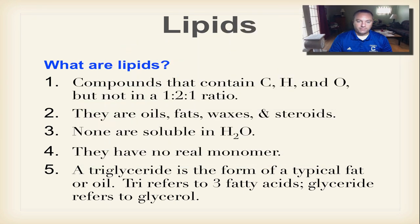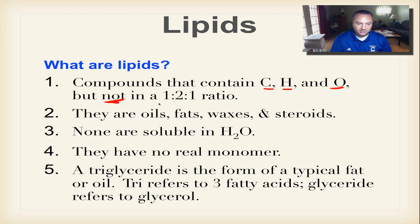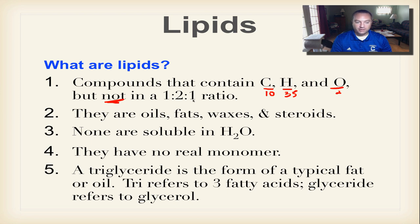What is a lipid? Lipids are almost just like a carbohydrate in the fact that they're made out of carbon, hydrogen, and oxygen. But unlike a carbohydrate, they are not — and I want to stress this — not a one-to-two-to-one ratio. It could be something like 10, 35, and two, so not anywhere near the one-to-two-to-one ratio you'd find in a carbohydrate.